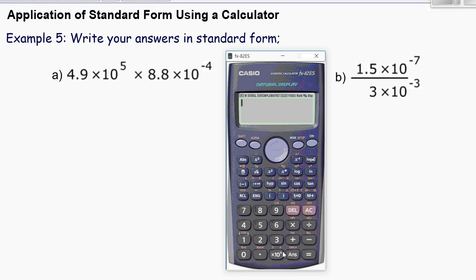The first thing you need to do is to plug the whole of this expression in your calculator. So 4.9 times 10 to the power 5 multiplied by 8.8 times 10 to the power negative 4. And if you press enter, you'll end up with an answer like this.